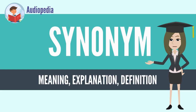Synonyms with the exact same meaning share a semasiological or denotational same meaning, whereas those with inexactly similar meanings share a broader denotational or connotational synonymy and thus overlap within a semantic field. The former are sometimes called cognitive synonyms and the latter near synonyms, plesionyms, or poecilonyms.